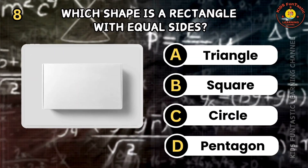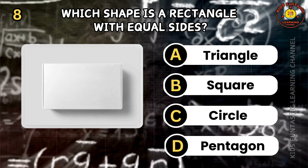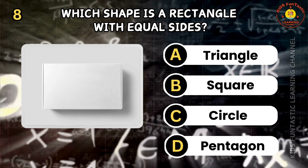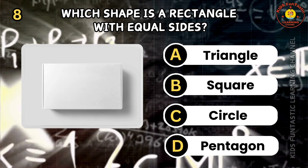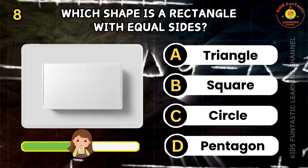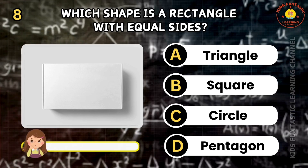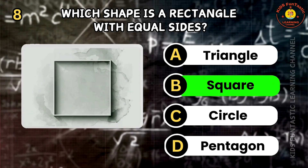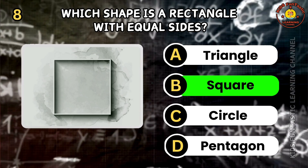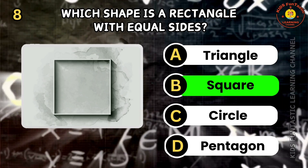Question 8. Which shape is a rectangle with equal sides? A: triangle, B: square, C: circle, D: pentagon. Fantastic! The correct answer is B. A square is a rectangle with equal sides.